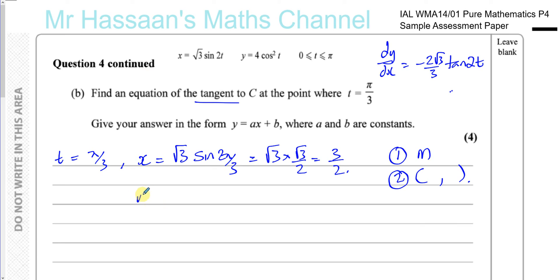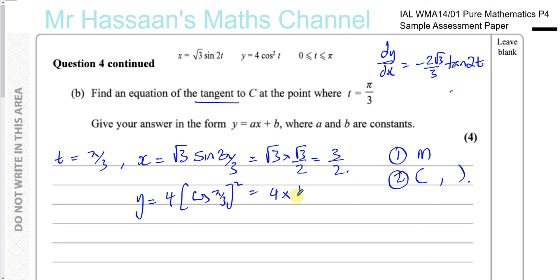Now finding the y-coordinate: y equals 4 times cosine squared of pi over 3. The cosine of pi over 3 is one half, so y equals 4 times (1/2) squared, which is 4 times a quarter, which equals 1. So the coordinates of the point where t equals pi over 3 are (3/2, 1).